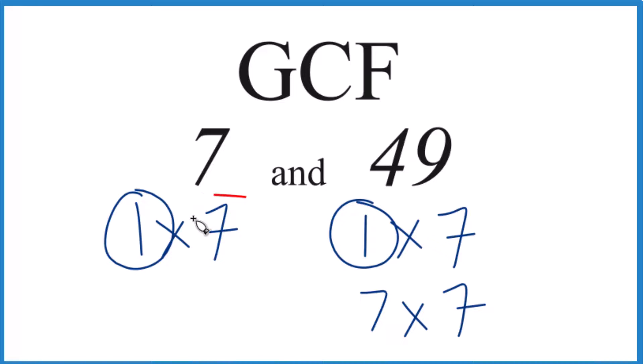The only other factor is 7. 7 goes into both 7 and 49, and 7 is the greatest common factor.